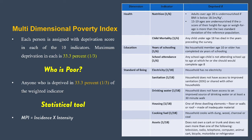The MPI has three dimensions — health, education, and standard of living — each with different indicators carrying specific weightages. Under health, there are two indicators: nutrition and child mortality. Nutrition is assessed using WHO z-score standards — children aged 15 to 19 and adults over 20 with a BMI below 18.5 kg/m² are considered undernourished. Child mortality refers to children who die below age 18, considered deprived.